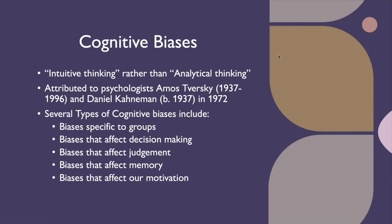The foundations of cognitive bias are based upon two psychologists — Amos Tversky and Daniel Kahneman — who started publishing in the 1970s. In a collaboration over two decades, they identified many types of cognitive biases. There are several types: biases specific to groups, biases that affect decision making, those that affect judgment, biases that affect our memory, and biases that affect our motivation.